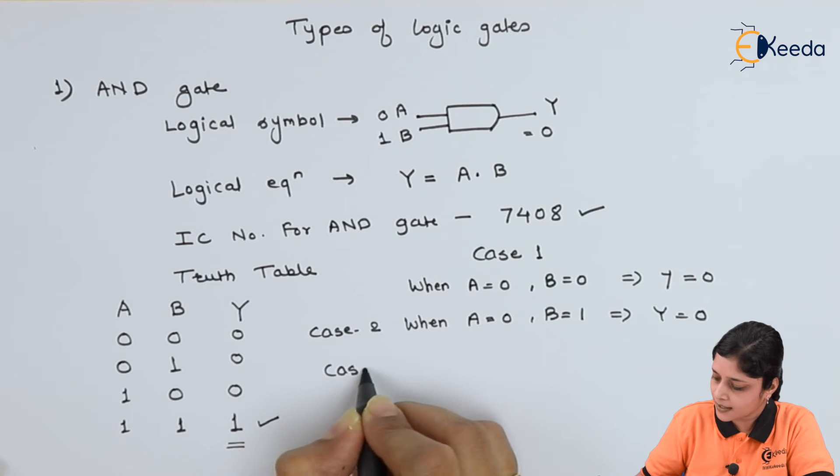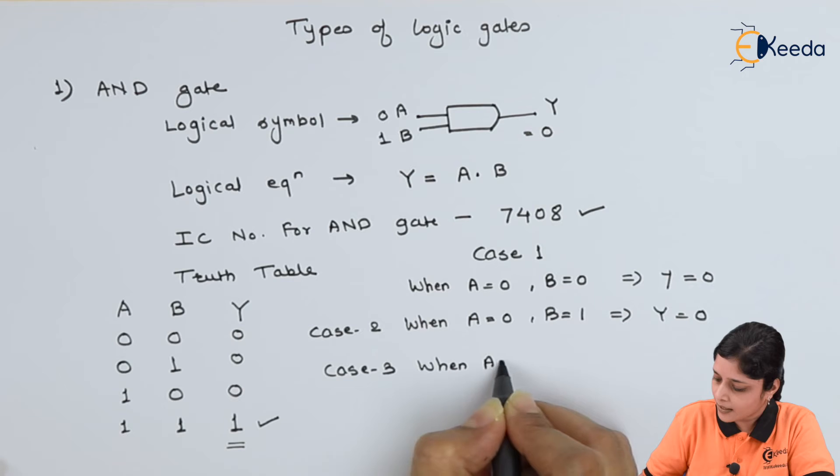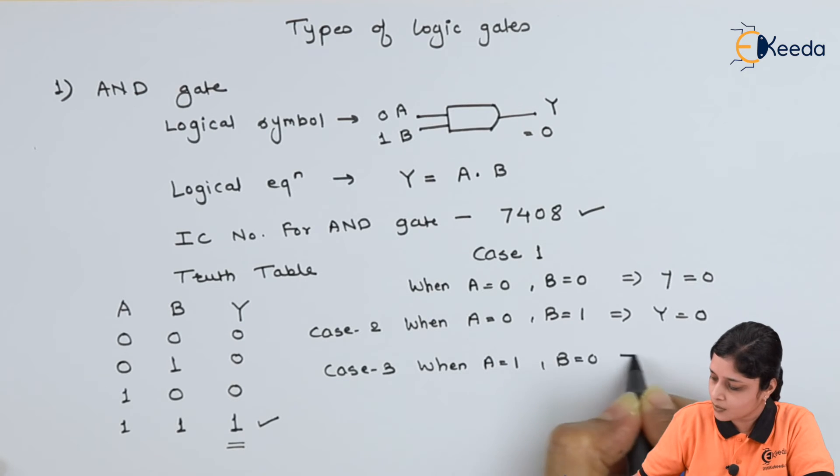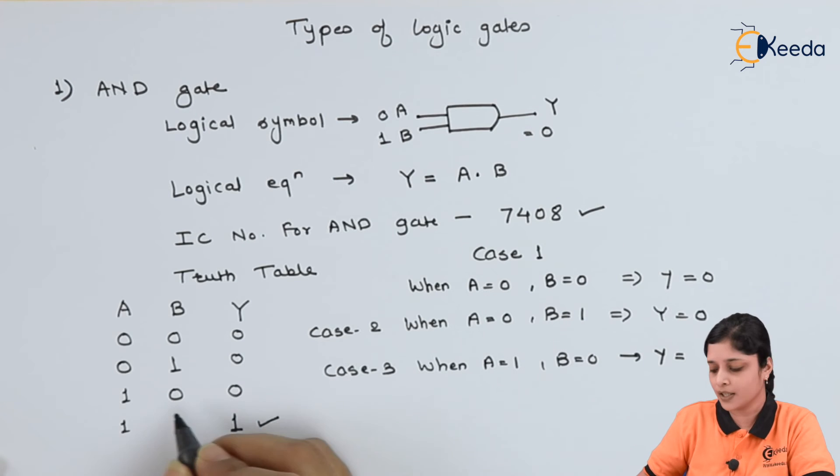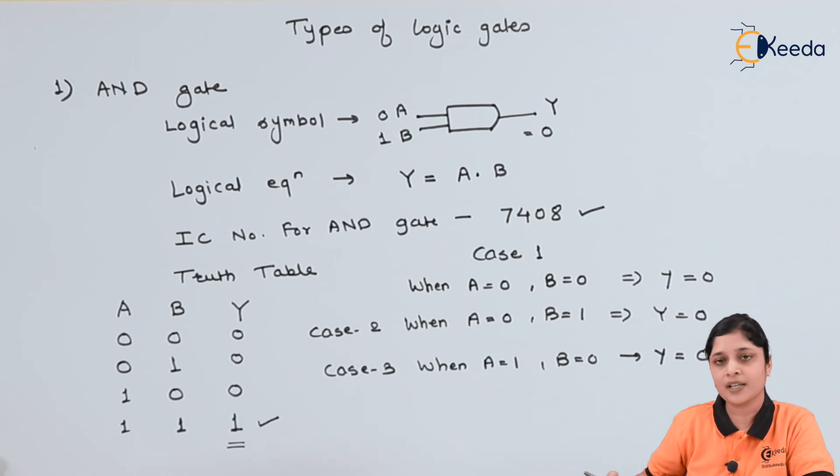Now third case, when A equals to 1, B equals to 0, then Y equals to, how you will get 0? 1 dot 0, that's why 0.